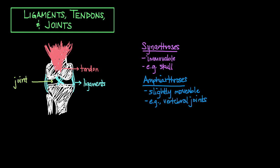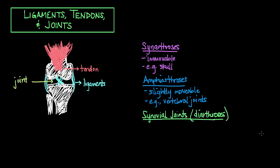And then finally, we have what are synovial joints, which are also known as diarthroses. One type, for example, is the ball and socket synovial joint. You'll find examples of ball and socket joints in your shoulders or in your hips. These are joints that have many degrees of motion.